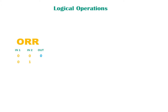Now let's say input IN1 is 0 and IN2 becomes 1 — the output you get is 1. The other way round: IN1 becomes 1 and IN2 goes to 0 — the output is still 1. And if both inputs are 1, or enabled, then the output is also enabled. This is the OR operation.